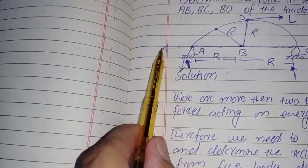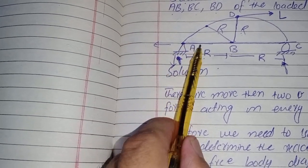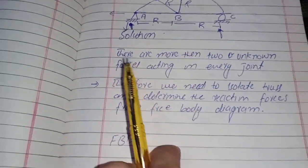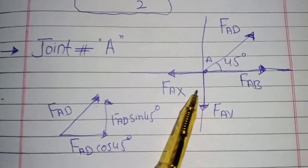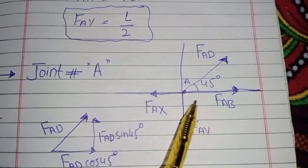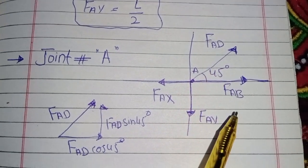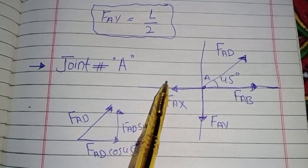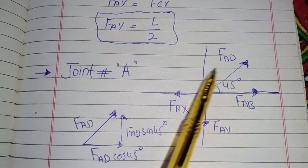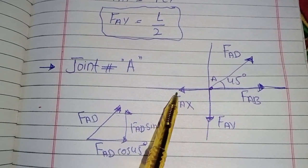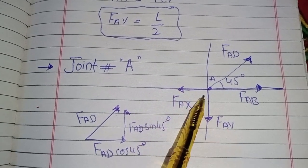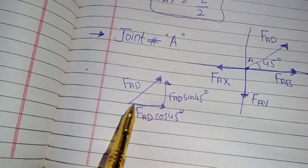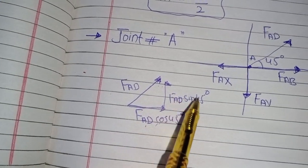Now I take joint A to analyze. I know the two reaction forces, and the two member forces F_AD and F_AB are unknown, so we can analyze this joint because there are only two unknown forces. I draw the free body diagram in the x-y plane of joint A. The forces acting are F_AD, F_AB, reaction force F_ay, and reaction force F_ax. I assume that these member forces are in tension, and I resolve them into components: the horizontal component is F_AD cos45° and the vertical component is F_AD sin45°.